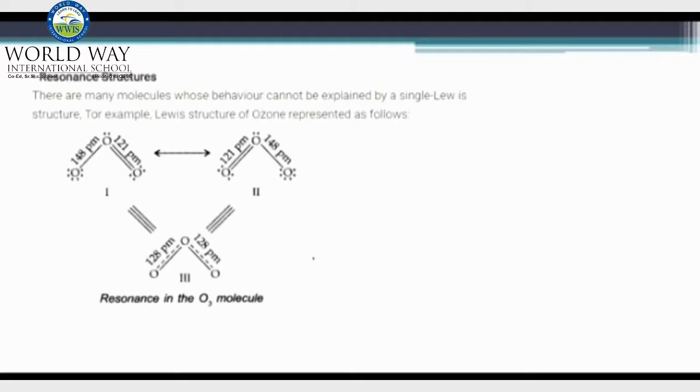The next topic is resonance and resonance structures. These structures are the major molecules whose behavior cannot be explained by the representation of a single Lewis structure. For the entire representation, we need the combination of resonating structures.